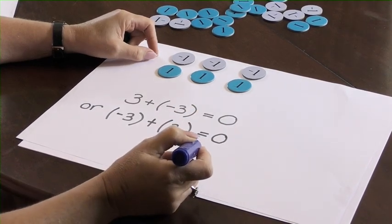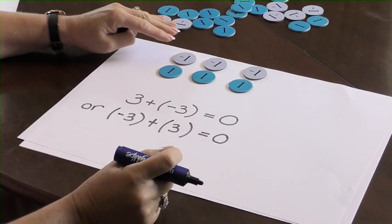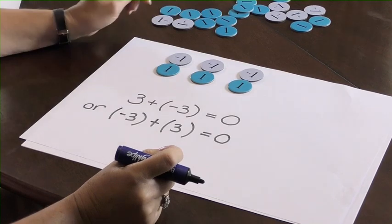So, we can think of them either way round. But what we've got is three zero pairs.